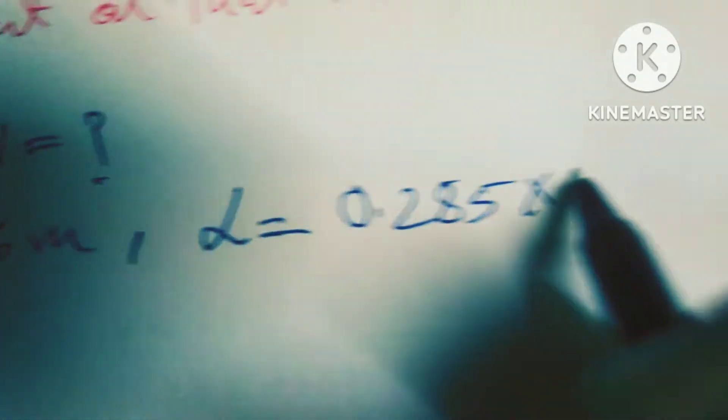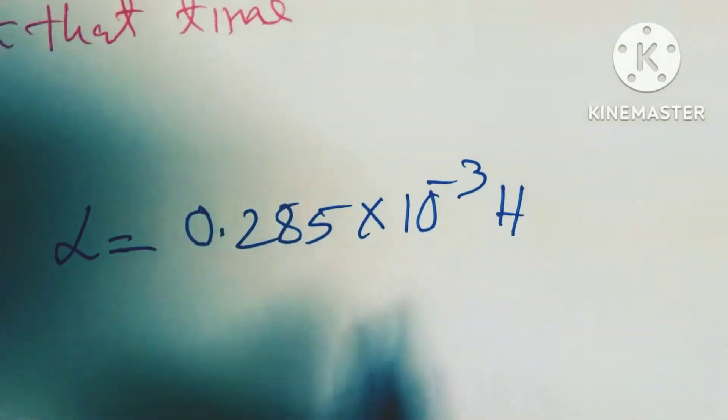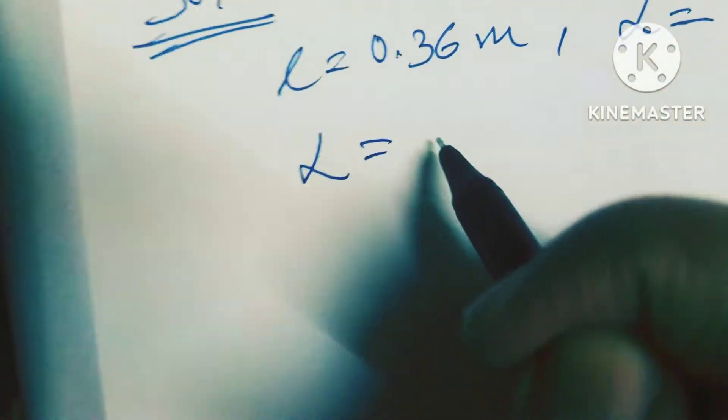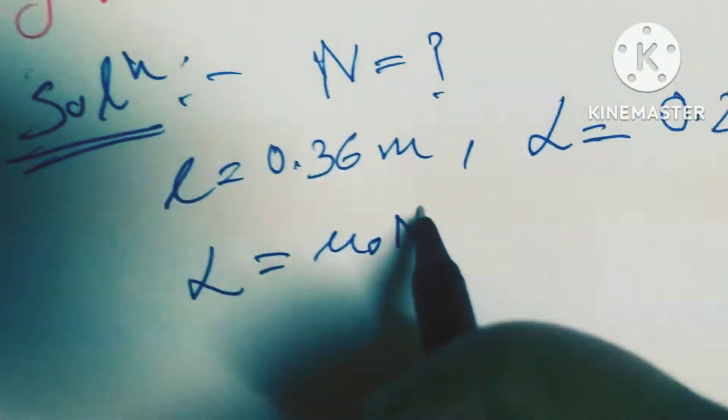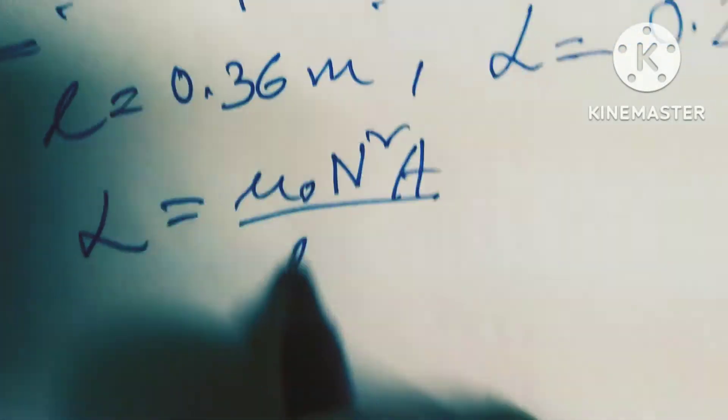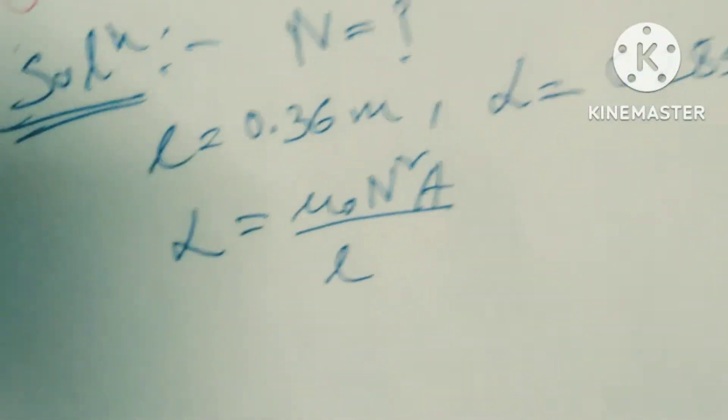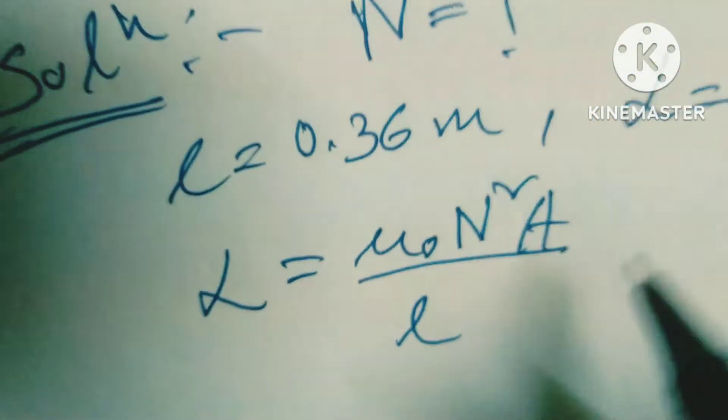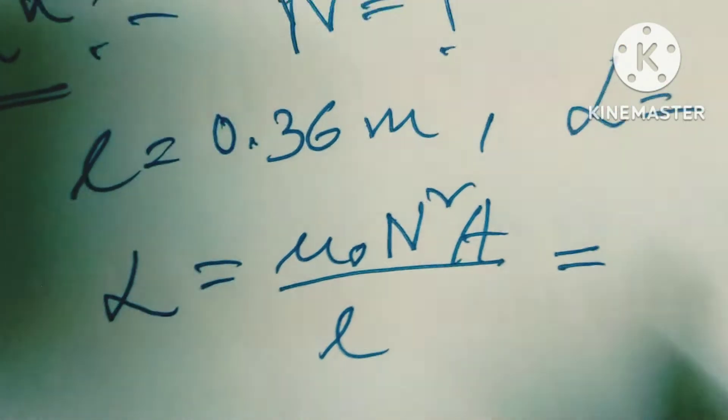We know the formula: L = μ₀N²A/l. Now friends, from this we solve for N. We have N² = Ll/(μ₀A).